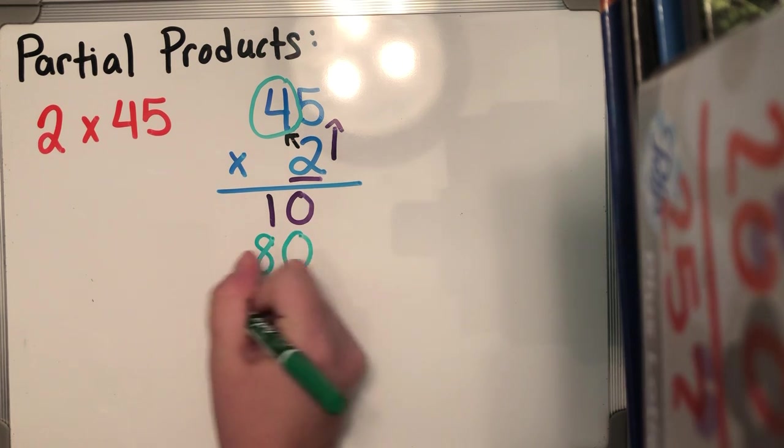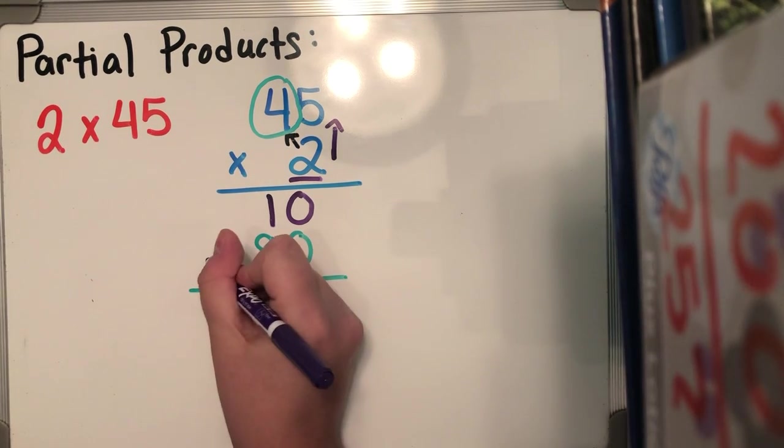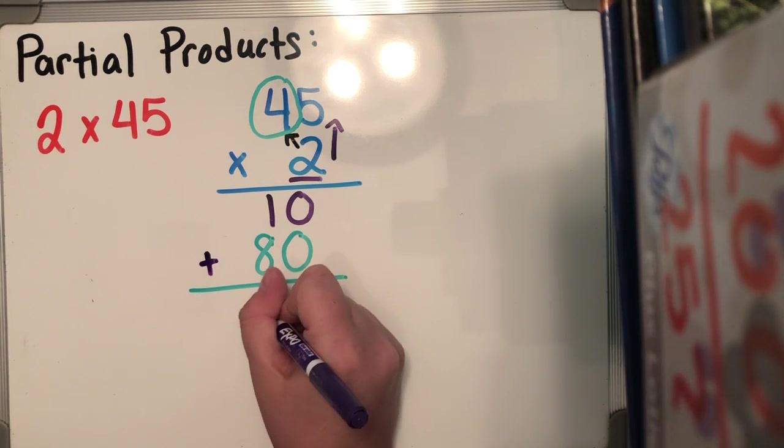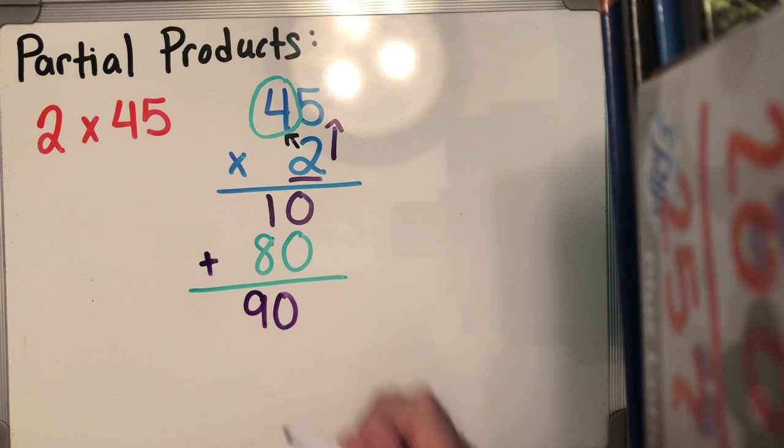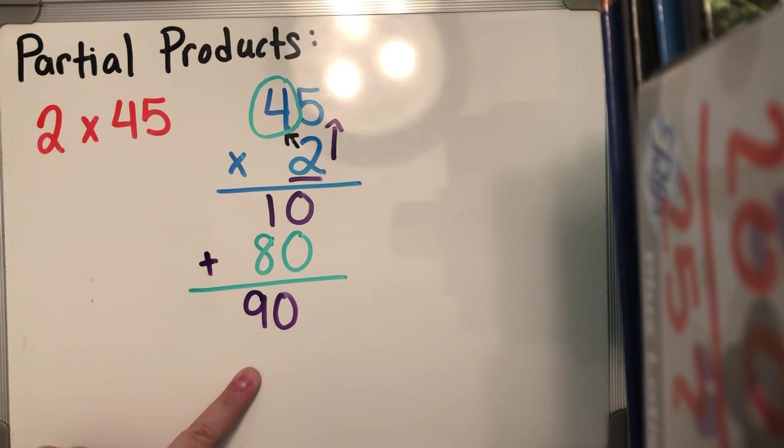And I'm gonna line up all my numbers in a row so that way when I can add, which is my next step, everything will be nice and even. So speaking of next step, I'm gonna start adding. So 10 plus 80 is gonna give me 90. So the product of two times 45 is 90.